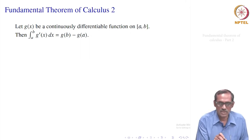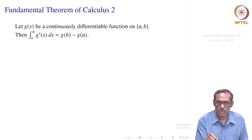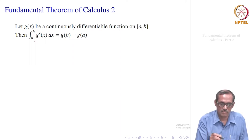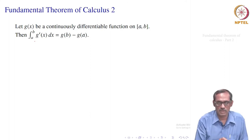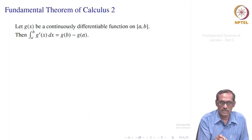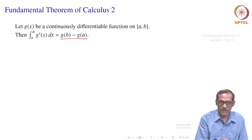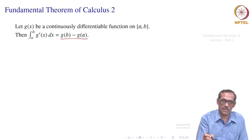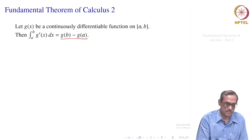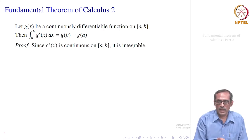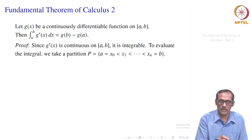Let g of x be a continuously differentiable function on the interval. We want the derivative of g to be continuous, so that integration will exist — it can exist under less restrictive conditions, but continuity is sufficient. This means that if you take any point x instead of b, the integral from a to x of g prime of t dt gives you g of x minus g of a. So the integral of the derivative equals the function minus g of a. Let us now see the proof.